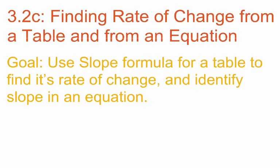Our third lesson on 3.2 is finding rate of change from a table and from an equation — two parts. The second part, finding rate of change from an equation, is really quite simple; all it is is identifying a term in an equation. The main part of this lesson is finding rate of change from a table. Our two goals are to use the slope formula for a table to find its rate of change, and to identify slope when given an equation.